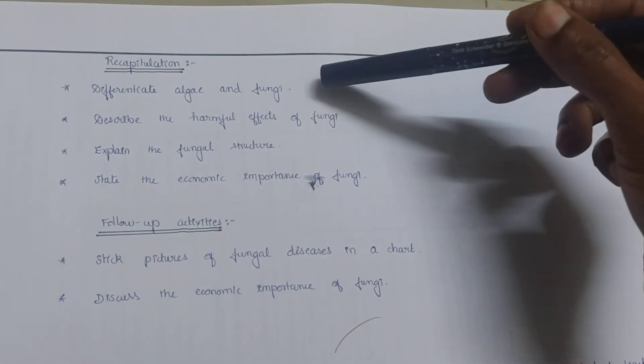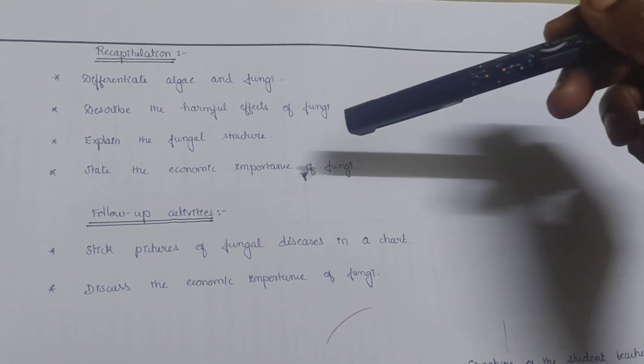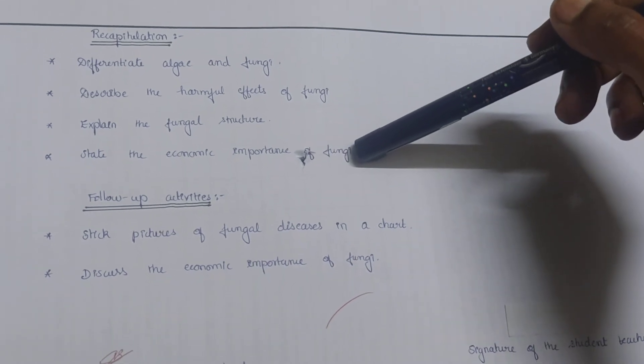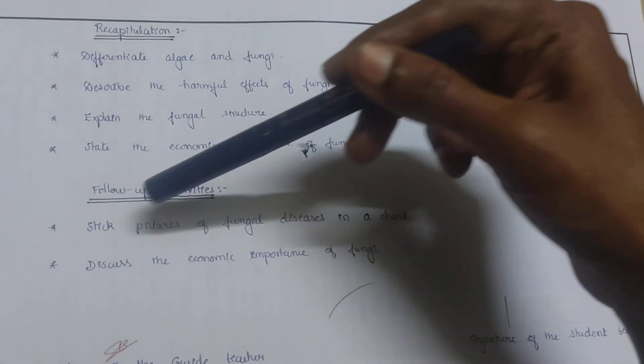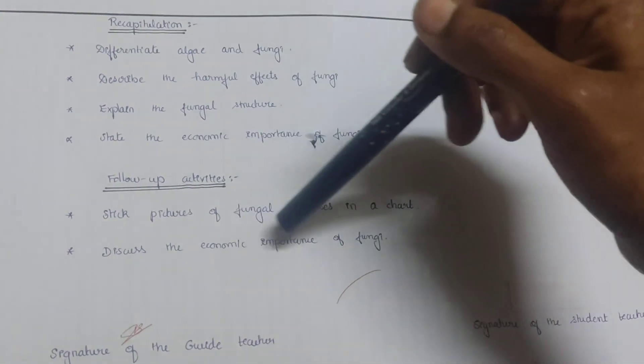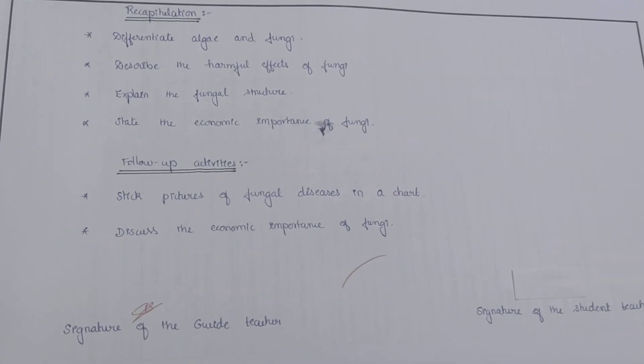Next we have the recapitulation: differentiate algae and fungi, describe the harmful effects of fungi, explain the fungal structure, state the economic importance of fungi. Follow-up activities: stick few pictures of fungal diseases in a chart, discuss the economic importance of fungi. And here ends the lesson plan.